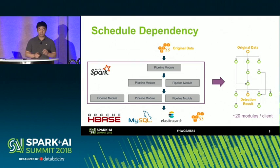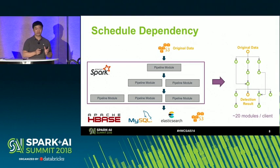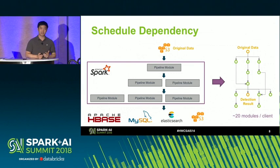Even so, because of the complexity of our algorithm, our module pipeline still contains around 20 modules per client. This also depends on different clients because they have different product features. How to schedule and manage those modules becomes a problem our production team needs to handle on a daily basis.